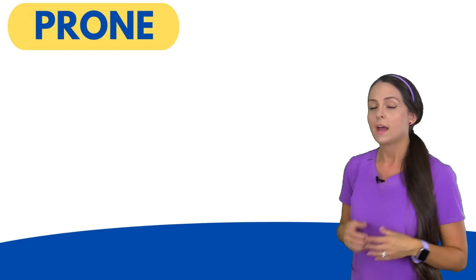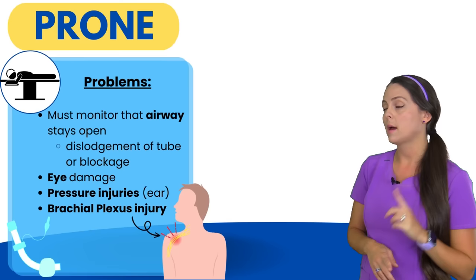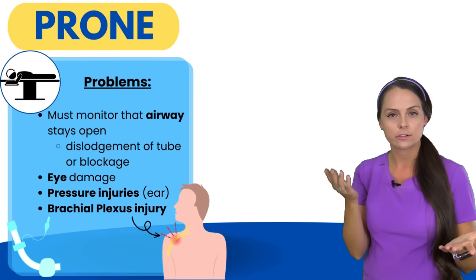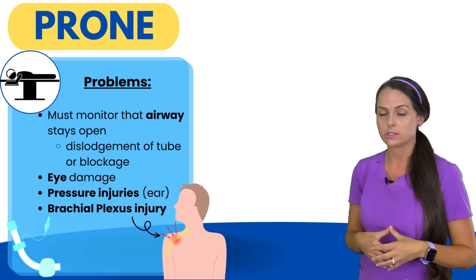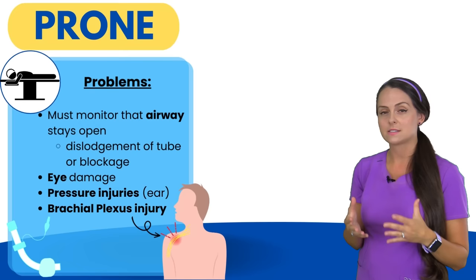There are problems with the prone position to monitor for. If your patient is proning and has mechanical ventilation, you must monitor the airway because the tube could come out or become blocked. With the head turned, there is pressure on the ears that can lead to pressure injuries, and we must be careful not to put too much pressure on the eyes. Additionally, a brachial plexus injury can develop because those nerves can become damaged, so it's very important not to put too much pressure on that area.